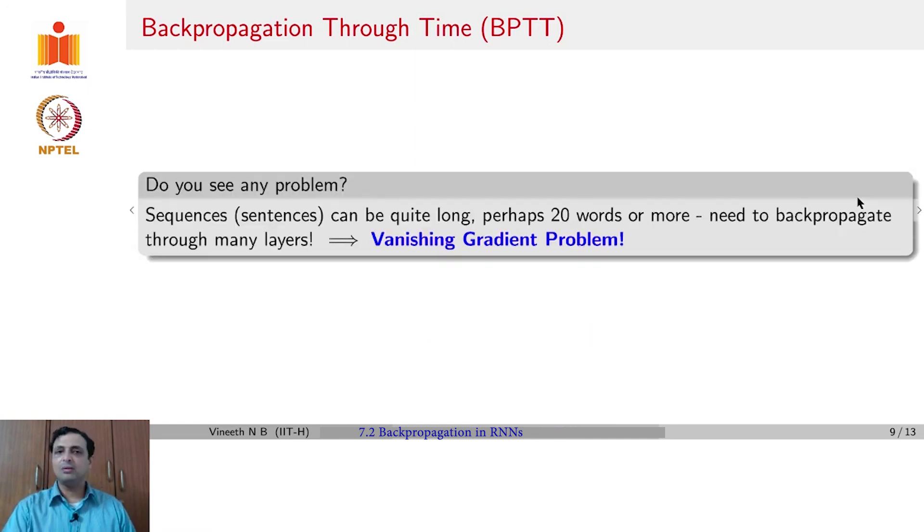Why could that cause a problem? If your gradient for each of those values is less than 1, multiplying these terms will lead to a vanishing gradient problem, because the multiplication of values less than 1 will quickly go to 0.